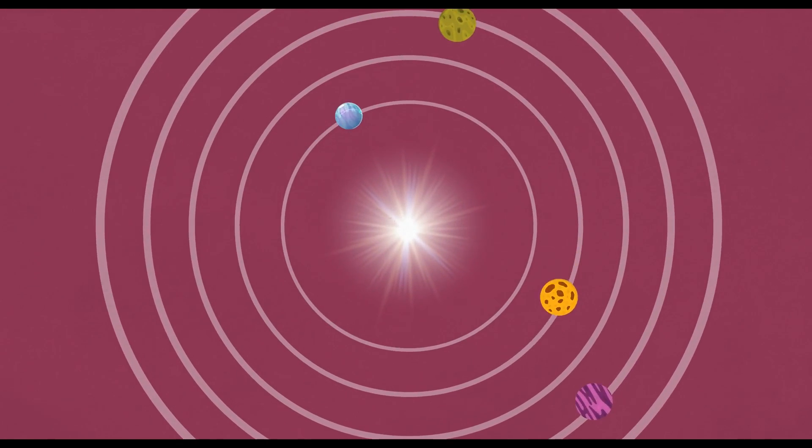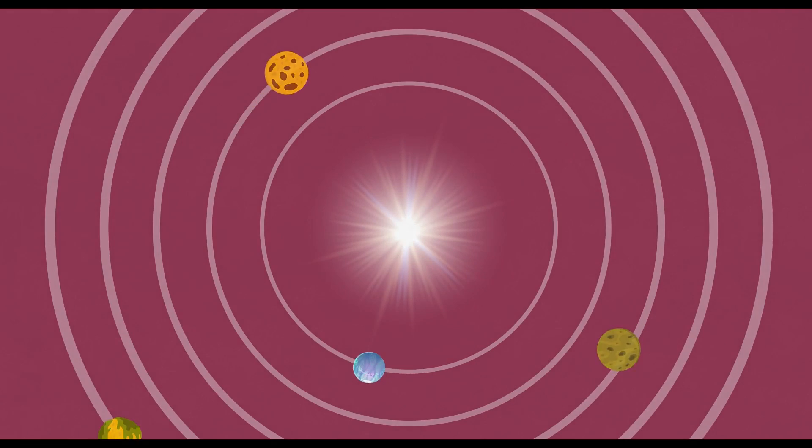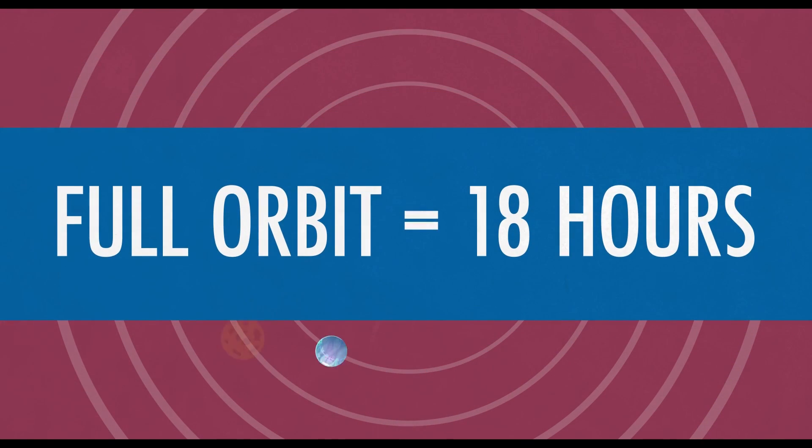As scientists conducted further investigations, they realized that the planet 55 Cancri e was the most interesting one out of the group. It is twice the size of Earth and is located extremely close to its parent star, so close in fact that it is believed to complete a full orbit in less than 18 hours.